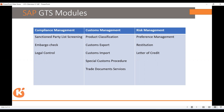In compliance management, the sanctioned party list covers all globally denied customers with whom we are not supposed to do business. If you do, you are going against the rules of your country, and the client will have to pay penalties to the government — sometimes it may even cause the client's industry to shut down.